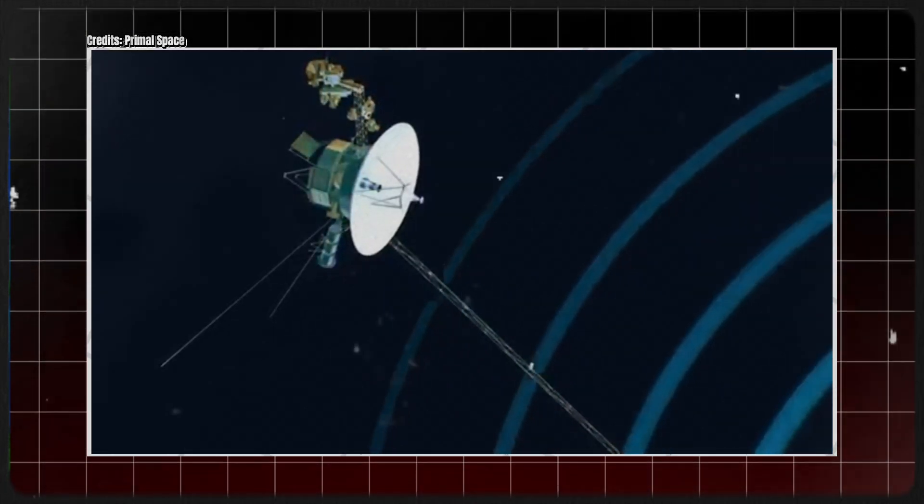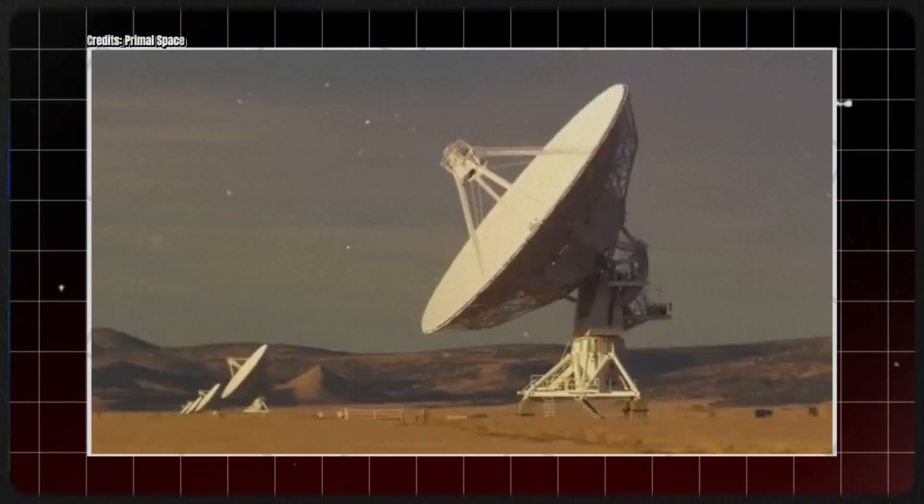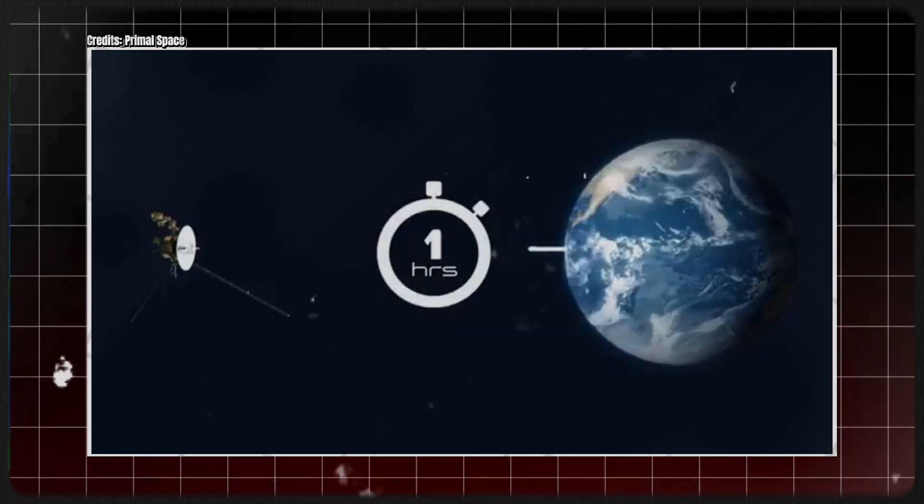Data is stored on 8-track tape recorders, a technology that has long since become obsolete. Yet the information gathered by these instruments has been indispensable in advancing our understanding of the outer solar system and beyond.